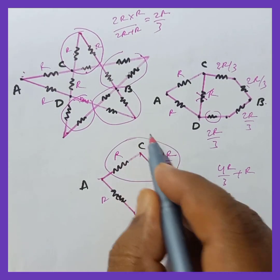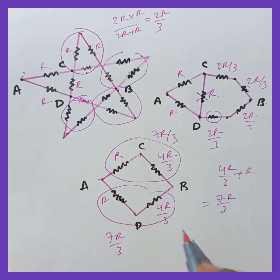Then after that you should know one thing. This combined together is going to become 7R by 3. So 7R by 3 and 7R by 3 are parallel.